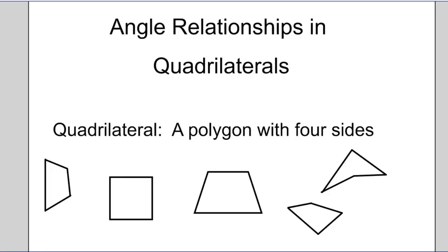In this video we'll be talking about angle relationships in quadrilaterals. A quadrilateral is a polygon with four sides, and you can see in front of you several different examples of quadrilaterals.